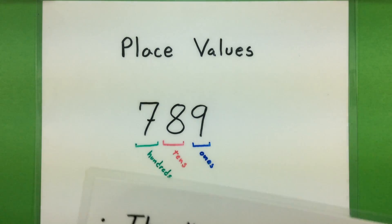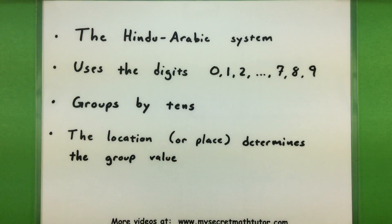A little bit about place values so that you have a better understanding of how they work. Primarily, we use the Hindu-Arabic system, which takes the digits 0 through 9 and then groups them by powers of 10.